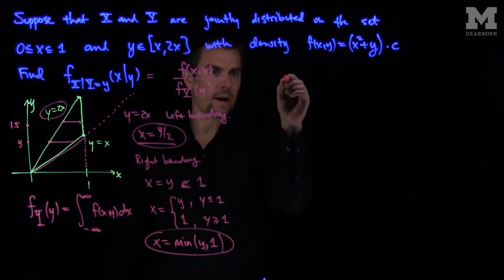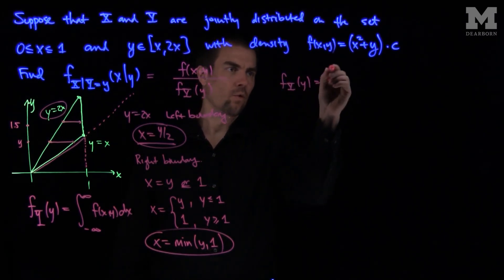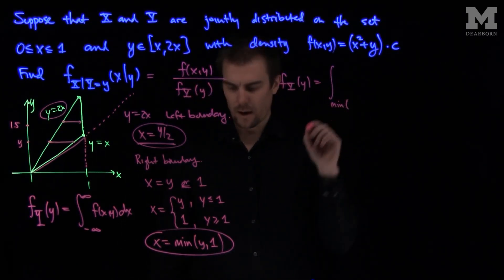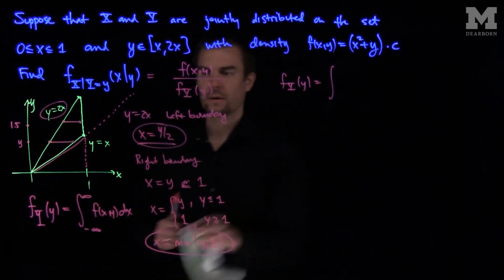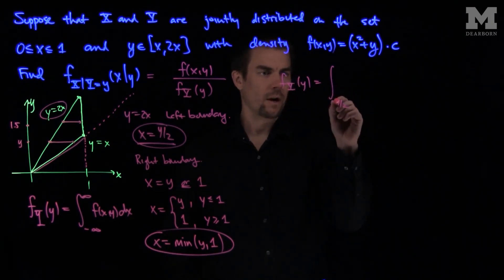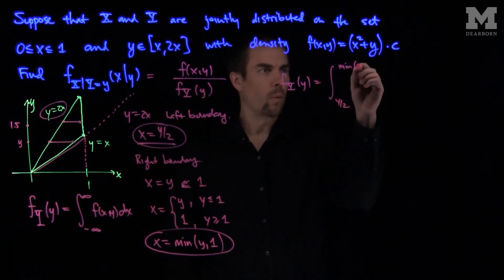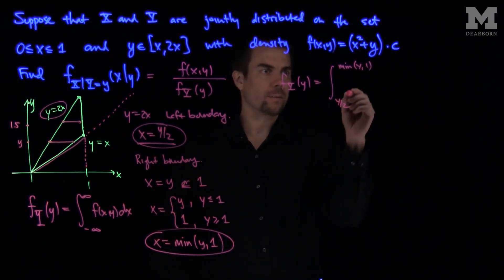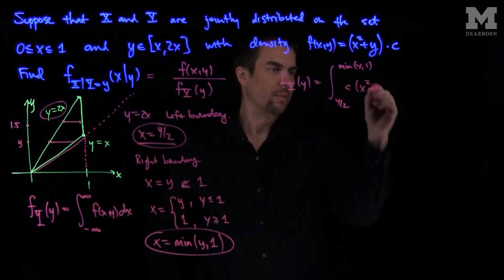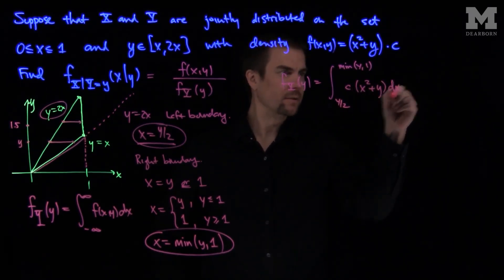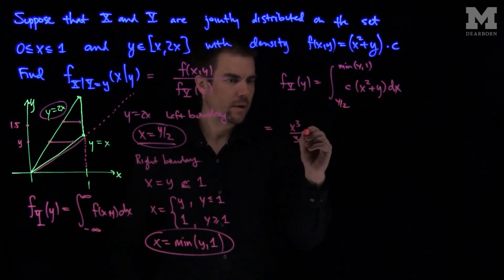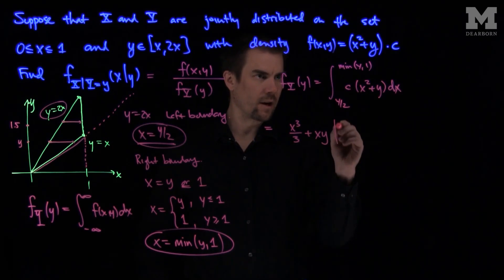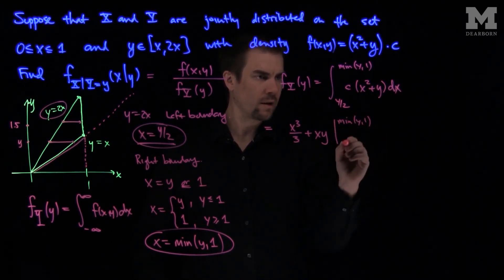Our f_Y(y) will be the integral from y over 2 up to the minimum of y and 1 of the PDF, which is c times (x squared plus y), dx. Integrating gives x cubed over 3 plus x·y, evaluated from y over 2 to the minimum of y and 1.